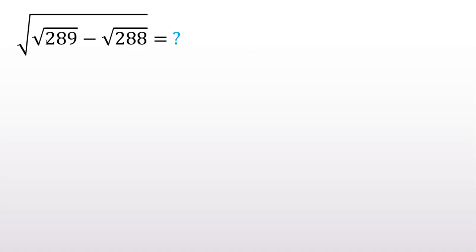Square root of square root of 289 minus the square root of 288 is what? Okay, square root of 289 is 17 because 17 squared is 289. So let's write it is equal to...